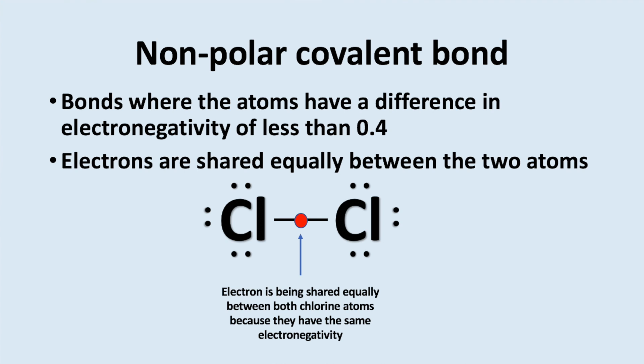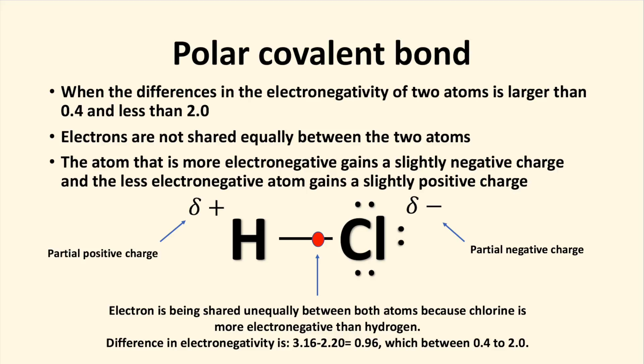The most prominent nonpolar bonds are found in diatomic molecules like chlorine and nitrogen because atoms will always have the same electronegativity. When the difference in electronegativity of two atoms is larger than 0.4 and less than 2.0, it makes it so one atom can pull electrons more than the other forming a polar bond.